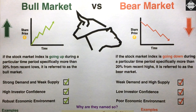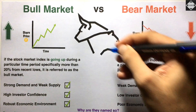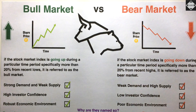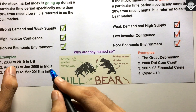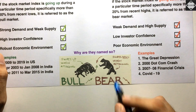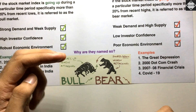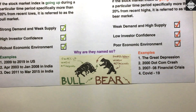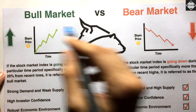Now you must be wondering: why are we using the names of these two animals — bull and bear — and not, say, cat and dog? The famous theory is that it's just about the way they attack. A bull swipes up with its horns when it attacks, and a bear swipes down with its paws. Bull — prices increasing (swipes up); bear — prices falling (swipes down). Simple.